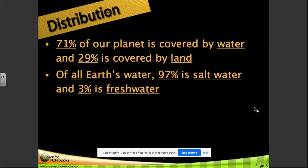71 percent of our planet is covered by water and 29 percent is covered by land. Of all Earth's water, 97 percent is salt water and 3 percent is fresh water.